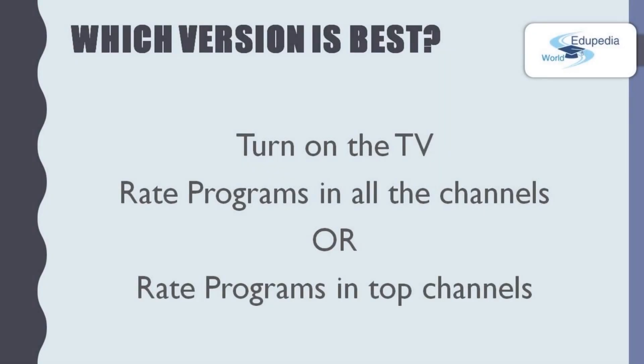Now tell me, what solution, what algorithm you mostly preferred? Version 1, version 2 or version 3? Let's take the version 1, turn on the TV and watch whatever it appears. Probably not. You will not waste your time to something that you don't like. So, we can cut down the version 1.